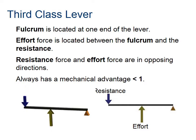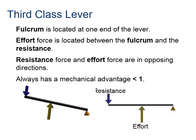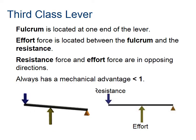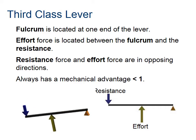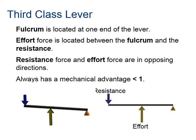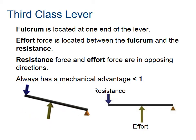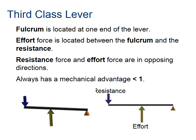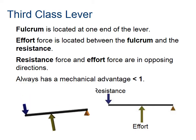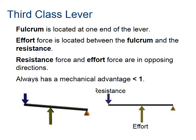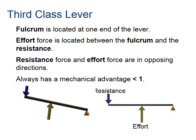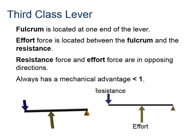The third class lever is similar to the second class in that the fulcrum is at one end, but here the resistance force is at the other end — whereas in the second class lever the effort force was at the end. When we calculate the mechanical advantage for a third class lever, it's always less than one. That means you'll have to put in more effort force than the resistance; for example, over 100 pounds of effort to move 100 pounds of resistance.